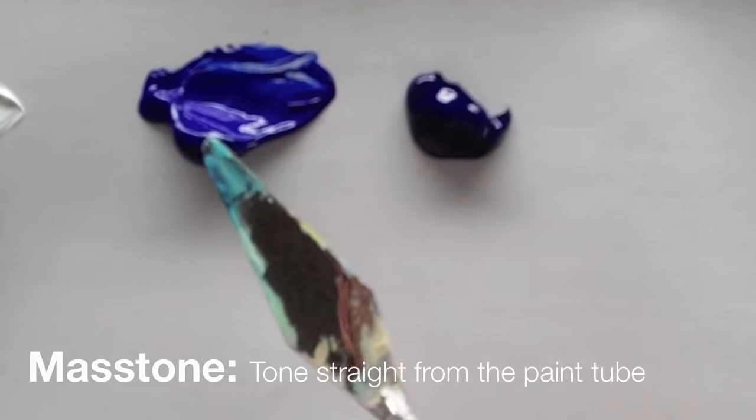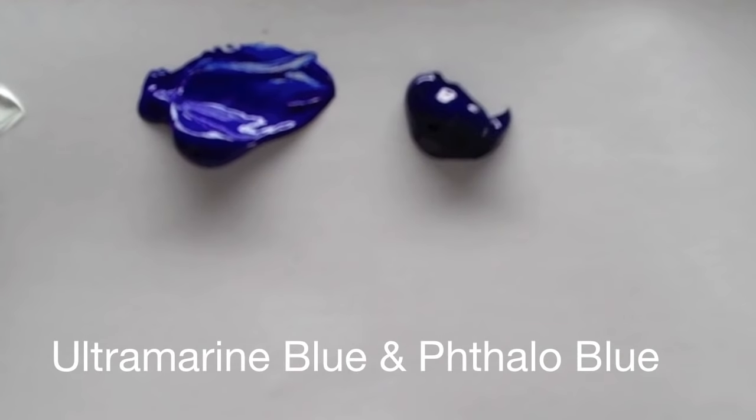So these mass tones, this is an ultramarine blue and a phthalo blue, are quite similar. This one looks a bit darker but essentially they're reasonably close to each other.